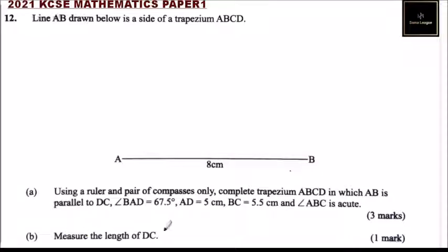Part B, measure the length of DC. So with the information that is given, first of all you have to follow the instructions given. You are told to use a compass and a ruler and a pair of compasses, so you don't use a protractor to measure the angle.